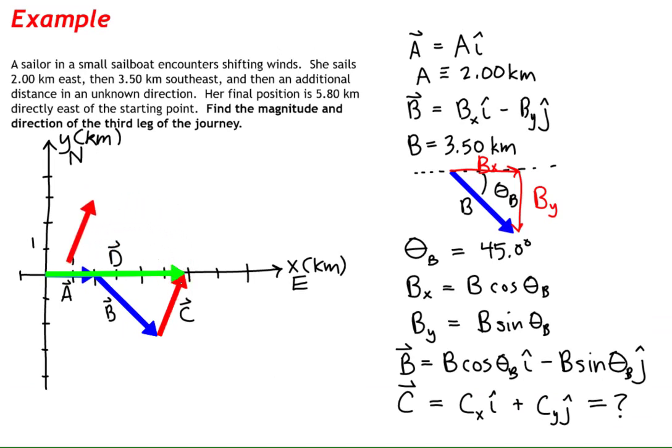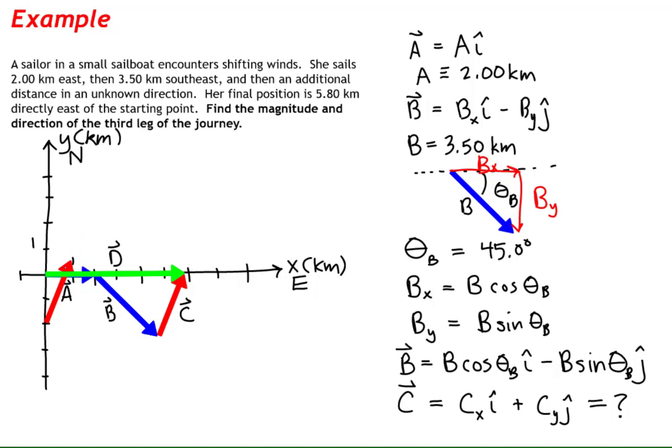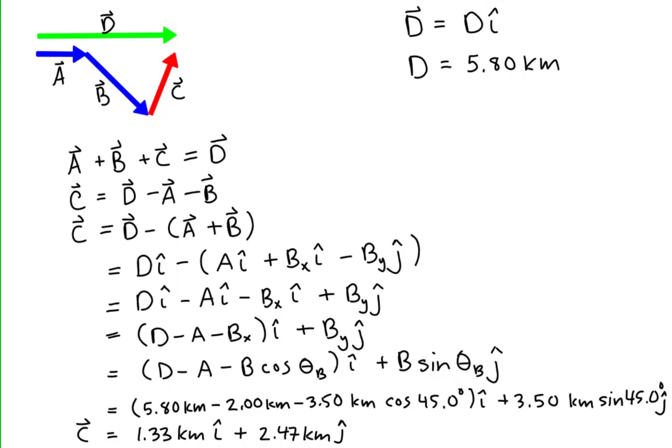Let's check this against our sketch. We see from our sketch that c vector has a positive x component around one unit and a positive y component between two and three units. This is in the same ballpark as our algebraic values. So we should feel good about our work and box our final answer.